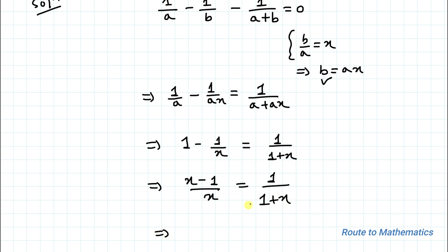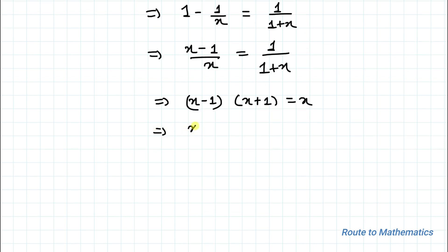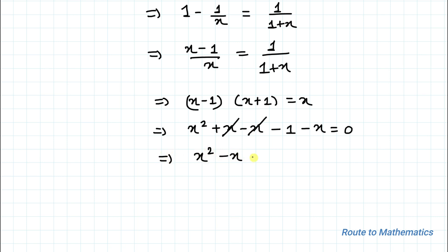Now doing the cross multiplication, we have (x - 1)(x + 1) = x. Expanding gives x² + x - x - 1, then taking x to the left-hand side: x² - 1 - x = 0. The positive x and negative x cancel, so this implies x² - x - 1 = 0.